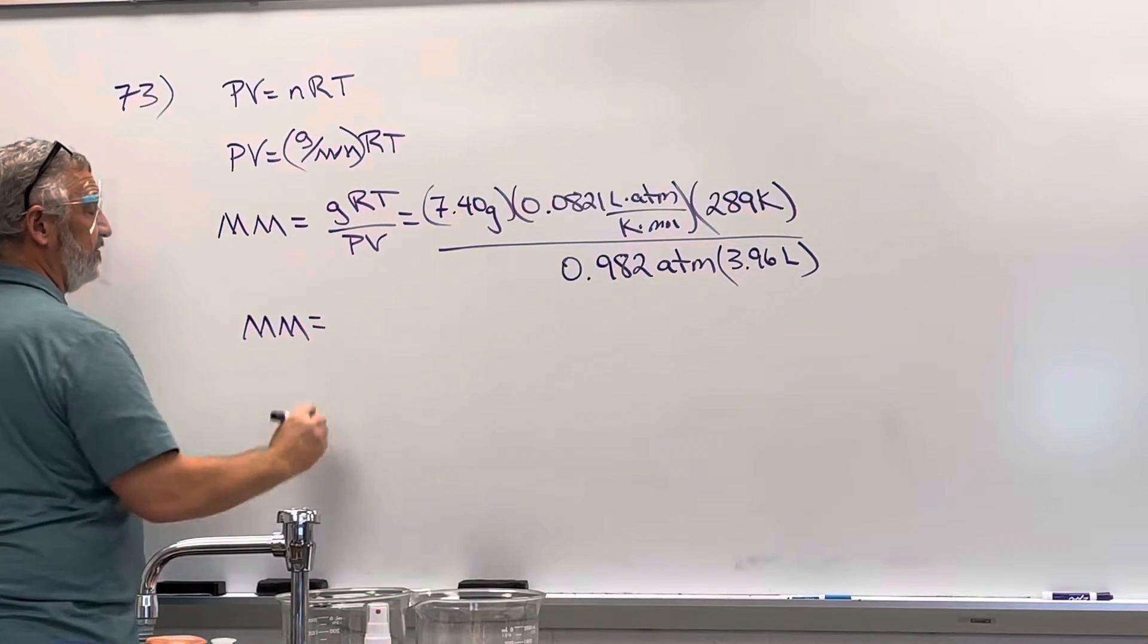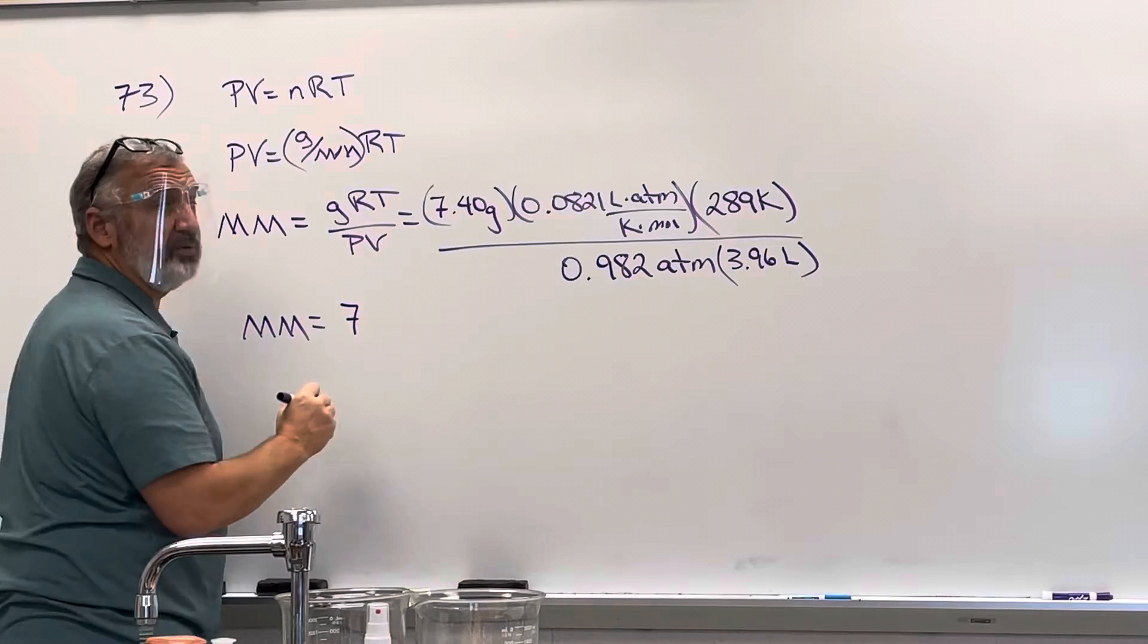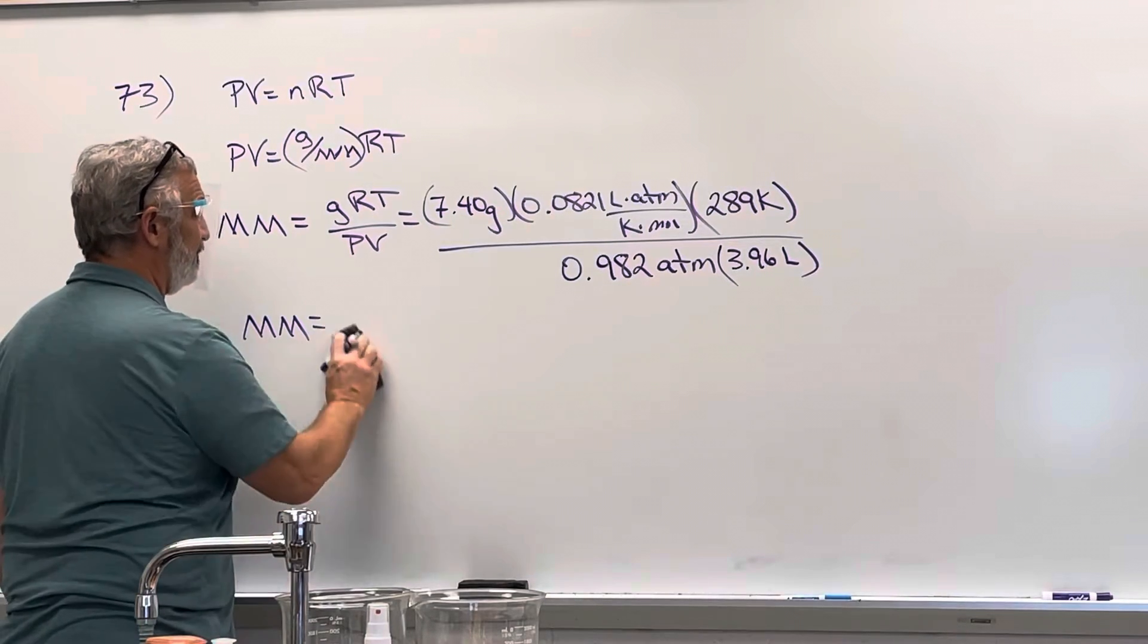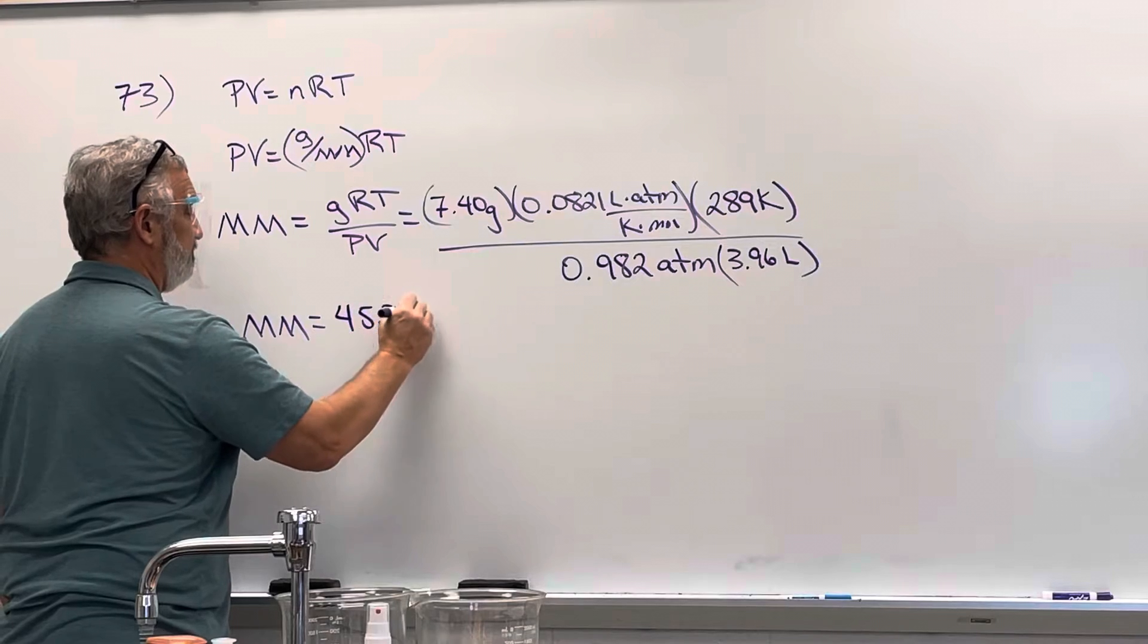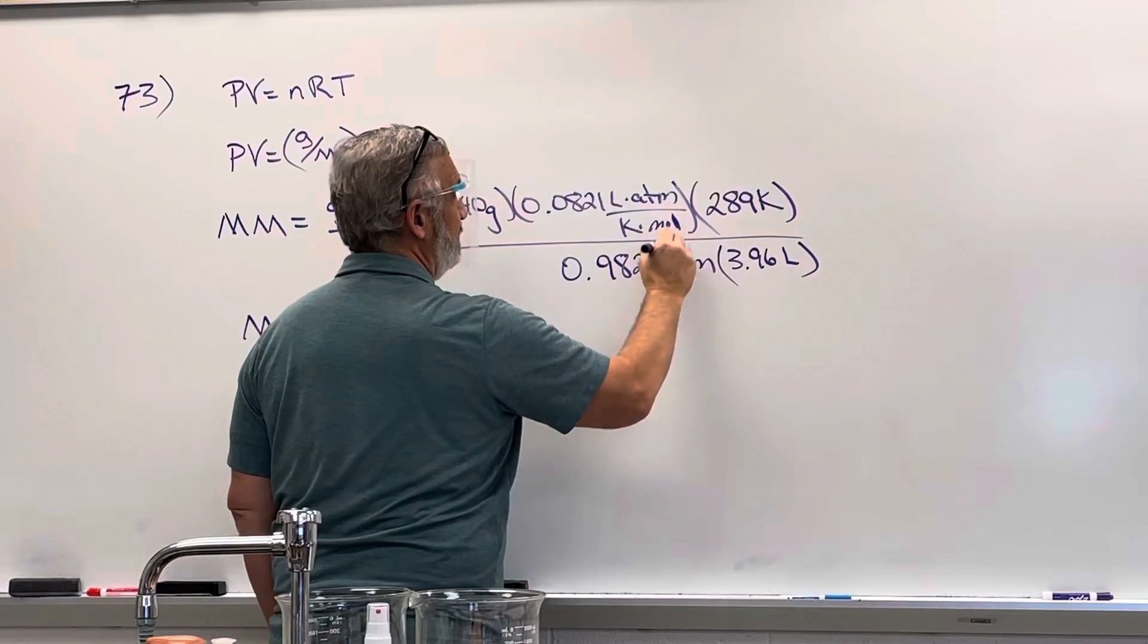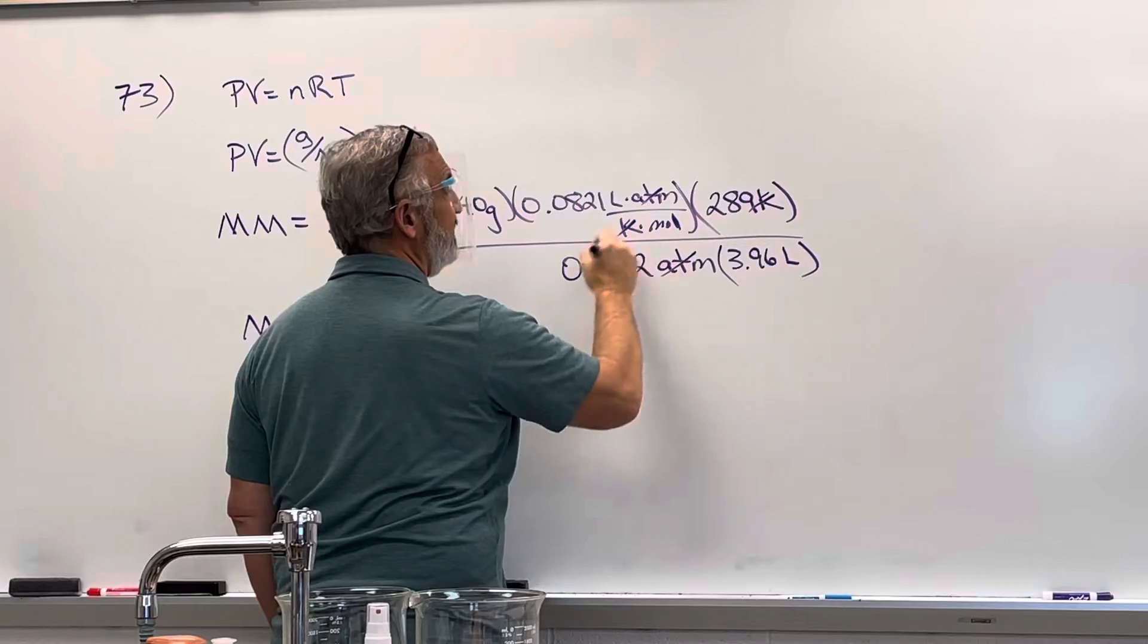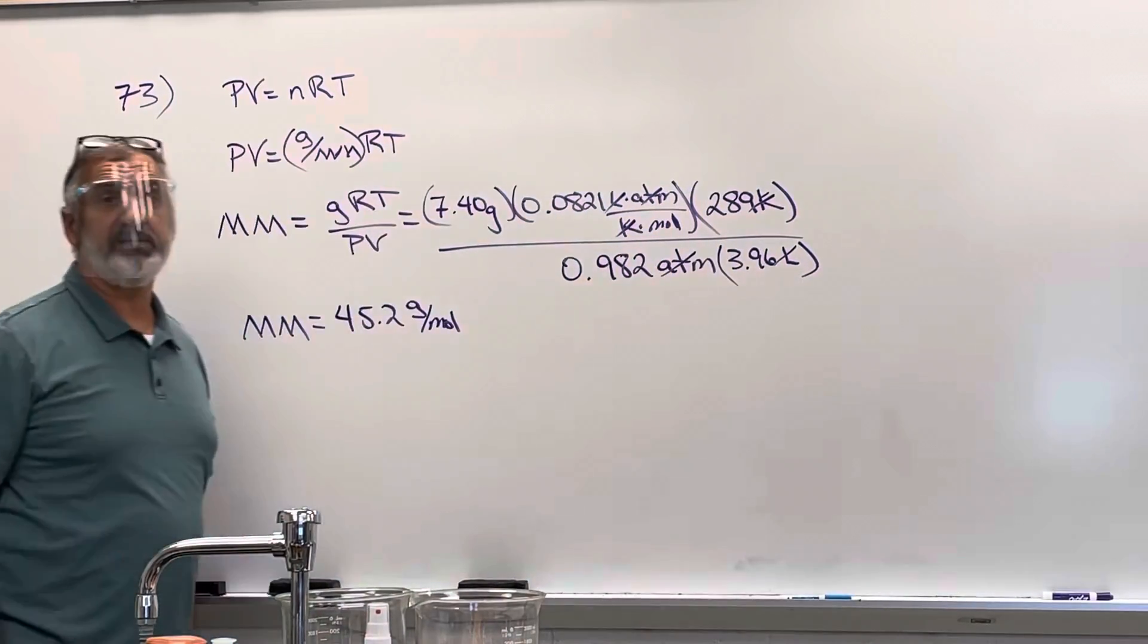So you plug all that in to your calculator, what's the molar mass turn out to? 45.2 grams per mole. Atmospheres cancel, Kelvins cancel, liters cancel, leaving grams divided by moles, which is molar mass.